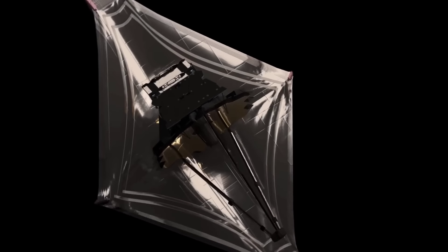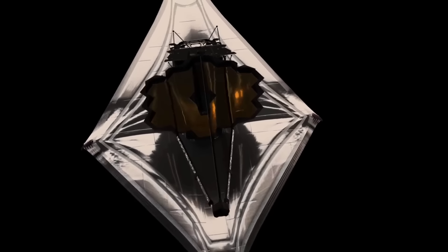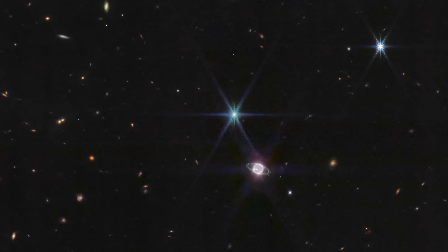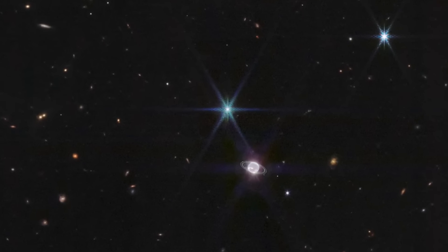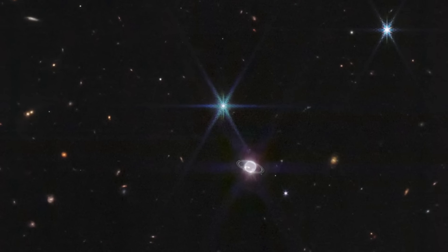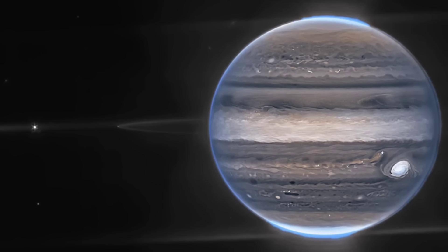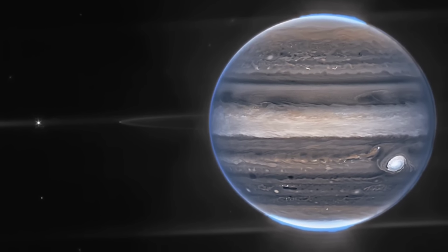NASA's James Webb Space Telescope was recently focused on planets within our own neighborhood and it didn't disappoint as it sent its first images of Neptune. The brilliance of the James Webb sent back the clearest view of this distant planet's rings in more than 30 years. The James Webb's cameras also reveal the ice giant in a whole new light.